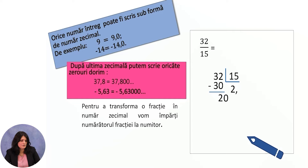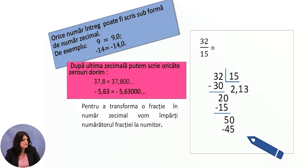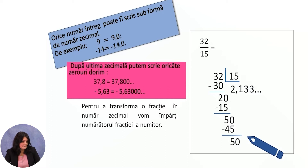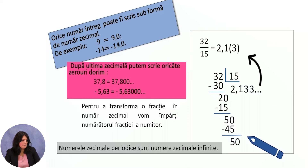15 goes into 20 once. 1 multiplied by 15 is 15. We perform the subtraction and get 5. We bring down a zero again. 50 divided by 15 is 3 times. 3 multiplied by 15 is 45. 50 minus 45 is 5. We observe the same remainder repeats. Bringing down another zero gives 50 again, so the result is again 3. Since we can add infinitely many zeros, we obtain an infinite sequence. Therefore, 32 divided by 15 equals 2 and 1.(3). Periodic decimal numbers are infinite decimal numbers.